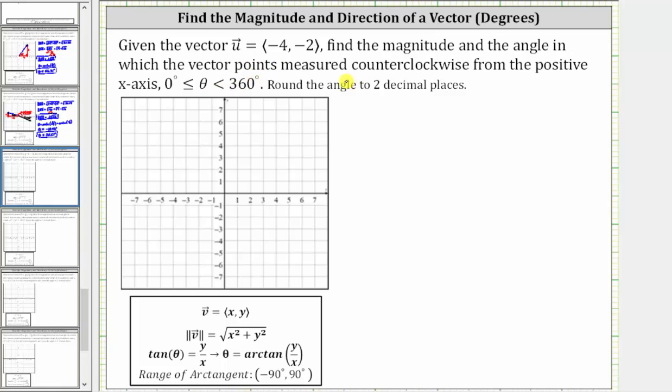Given vector u in component form, find the magnitude and direction, which is the angle in which the vector points measured counterclockwise from the positive x-axis, where the angle theta is in the interval from zero to 360 degrees.